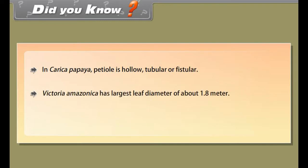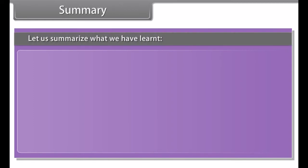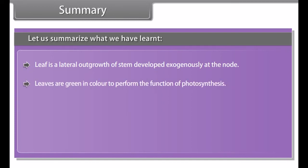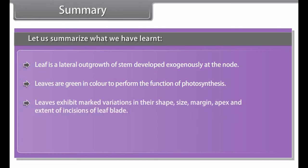Protection against browsing: By modifying into spines, leaves protect plants from grazing, for example, Opuntia and Barberry. It reduces rate of transpiration when modified into phyllodes, for example, Acacia. They help in climbing for plants having weak stems when modified into tendrils and hooks, for example, Smilax.